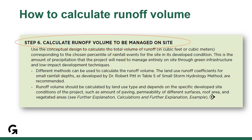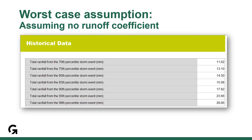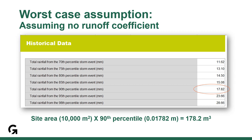Step six in the reference guide under step-by-step guidance outlines how to calculate the runoff volume, with more detail provided under further explanation. Generally, you have to consider the entire site area, the chosen percentile, and the runoff coefficients for different surface types. Sometimes project teams simply assume no runoff coefficient — that is, all rain landing on a surface becomes runoff. In that case, the project team multiplies site area by the chosen percentile to arrive at the runoff volume. This is an overestimation, but perfectly fine for review purposes as it assumes the worst case.